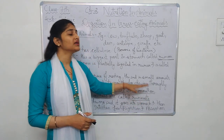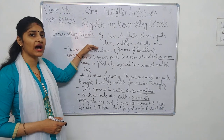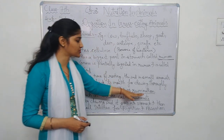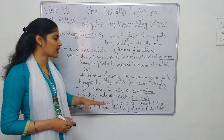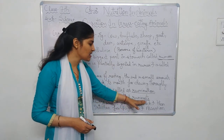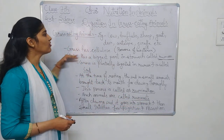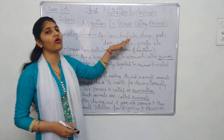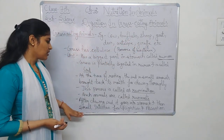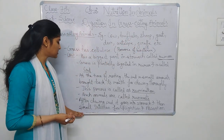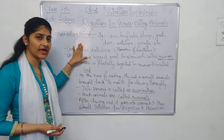These animals which eat grass and show the process of rumination are called ruminants. That means cow, buffalo, sheep, goat — all these are ruminants.